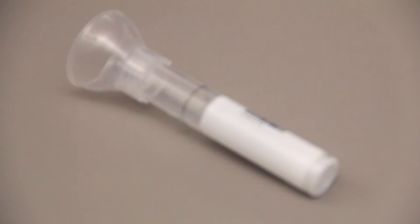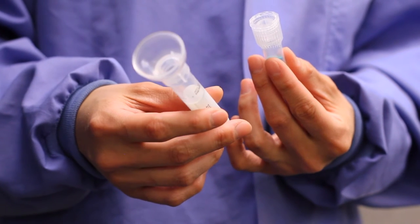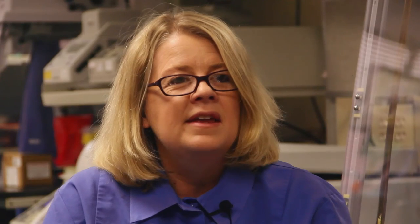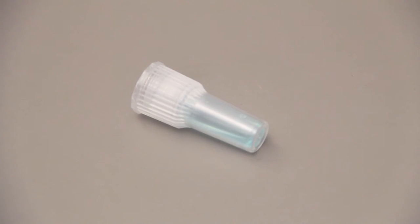The saliva collection kit includes a collection device, which essentially is a tube with a funnel on it. The donor simply provides saliva, spits into the collection device up to a designated line, and then the funnel is removed and a preservative is added.